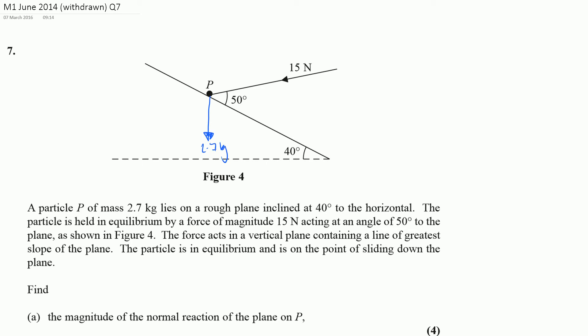We've got some more information about a force acting in the vertical plane, and the particle is in equilibrium on the point of sliding down the plane. If it's on the point of sliding down the plane, that tells me there must be friction acting up the plane. More than that, I know the value that friction will take will be the maximum possible frictional value, F max.